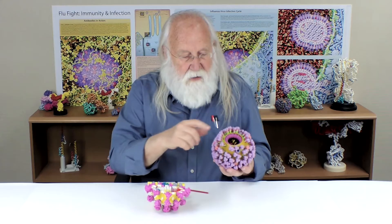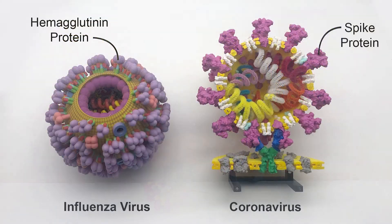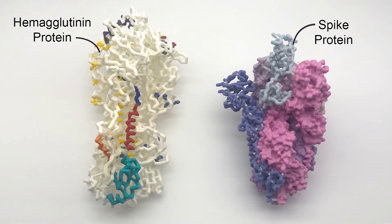In the case of influenza virus, these proteins are called hemagglutinin. We have detailed models of the 3D structure of each one — the hemagglutinin or the spike protein — that we'll be looking at a little bit later.